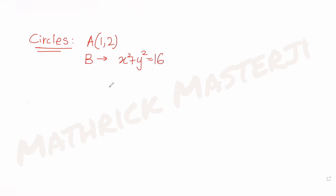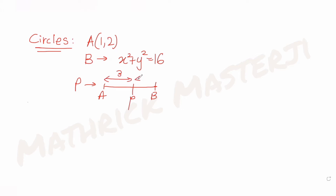We have to find the locus of point P, which divides your line segment AB in the ratio 3:2. The center of the locus of point P is a point C, given by (α, β).